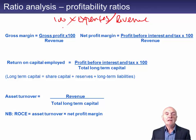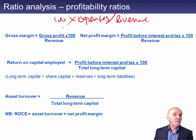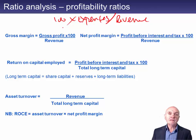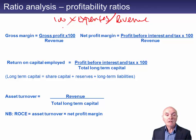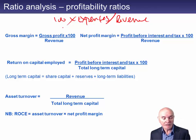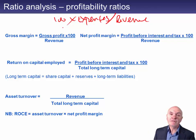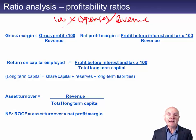Return on capital employed is like putting money in the bank — what do you earn on that? It's the profit before interest and tax over capital employed. What people normally get wrong is what capital employed means: it is the share capital, the equity or reserves, and long-term liabilities — so all sources of capital. Some people also look at asset turnover, which is really saying how many dollars of revenue you generate per dollar of assets — how hard are you working the assets.